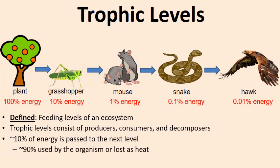Where did the other 90% of the energy go? It's used by the organism while they're alive, and quite often in warm-blooded animals it's lost as heat. This is why energy is passed at a pretty inefficient level — only about 10%.